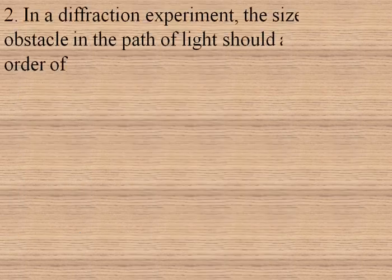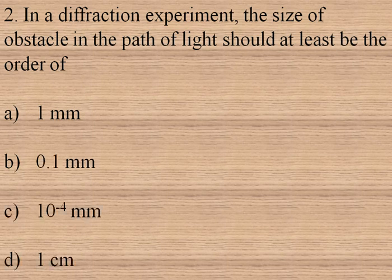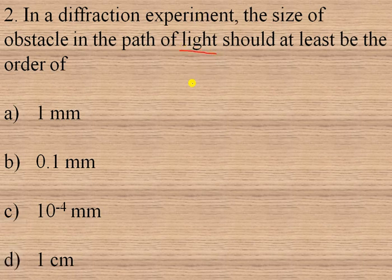The next question is: in a diffraction experiment, the size of obstacle in the path of light should at least be the order of — 1 mm, 0.1 mm, 10 power minus 4 mm, or 1 centimeter? For diffraction, the size of obstacle must be of the order of the wavelength of the diffracting wave. Here the diffracting wave is light, and the wavelength of light varies from 400 nanometer to 800 nanometer, meaning the order is 100 nanometers = 100 × 10⁻⁹ meter.